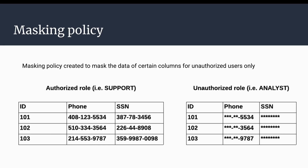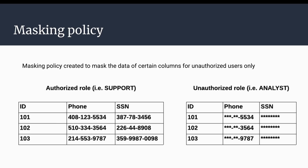This is how the masking policy works in Snowflake — when applied on a particular table, the column data will be masked for specific roles only. We need to explicitly apply this masking policy to a table, otherwise all other users who have normal access to that table will be able to see the entire data. This is the second level of security we can apply.